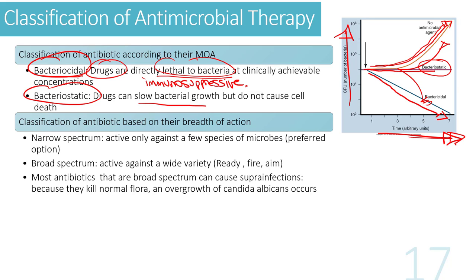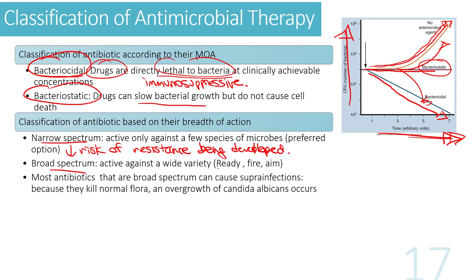Another way to classify antimicrobial therapy is narrow spectrum versus broad spectrum. Narrow spectrum antimicrobials are active against only a few species of microbes — this is the preferred option because there is less risk of resistance developing across different species. Broad spectrum antibiotics are active against a wide variety of microbes and are given when you don't know which bug is in the system, effectively wiping out a huge range of different species.